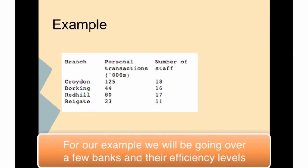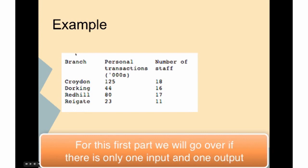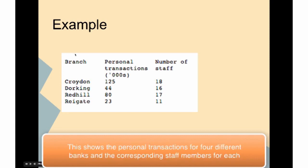For our example, we're going to go over a couple of banks and their efficiency levels. For this first part, we'll look at just one input and one output. This shows the personal transactions for four different banks and the corresponding number of staff members for each bank.